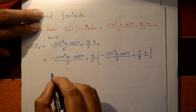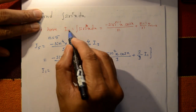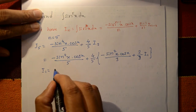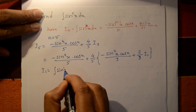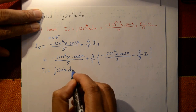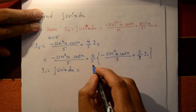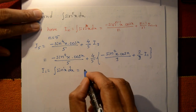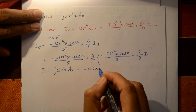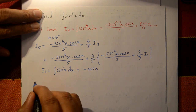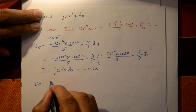Now find I₁, which means n equal to 1: the integration of sin raised to 1 x dx. The integration of sin x is minus cos x. So I₁ equals minus cos x.